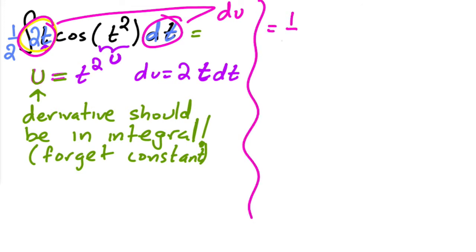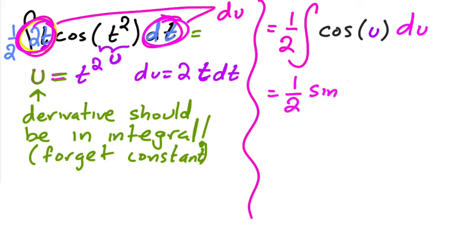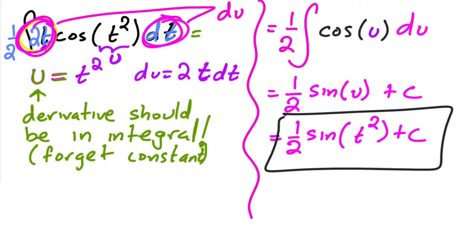And so then this is equal to one half the integral of cosine of u, and then du, right? Because the two t and the dt turned into du. And so then you can find the anti-derivative here. This is one half sine of u plus c or one half sine of t squared plus c. And that's it.